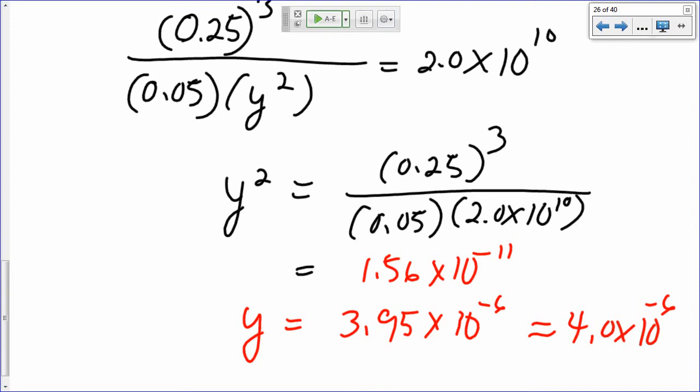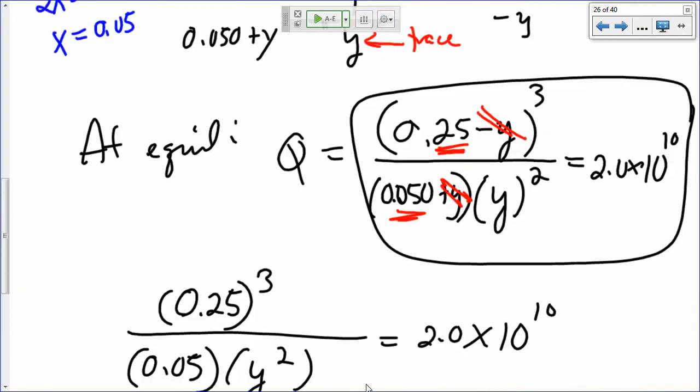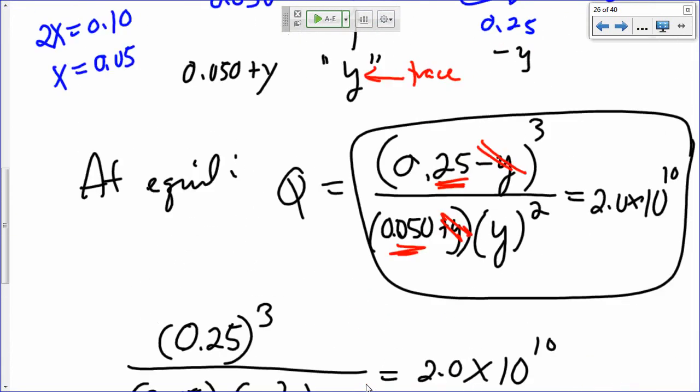Now, is that a valid assumption? Did we make a good assumption? If I were to subtract 4 times 10 to the negative 6 from 0.25, would that still be 0.25? Look, 0.25 minus 4 times 10 to the negative 6, that's still 0.25. If I add 4 times 10 to the negative 6 to 0.05, will that still be 0.05? Yeah. So that's a valid assumption.